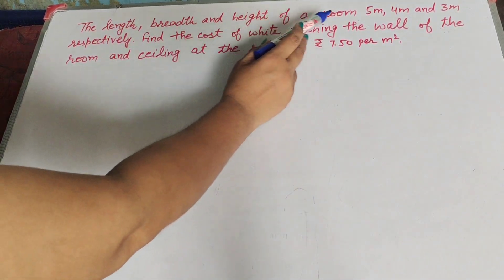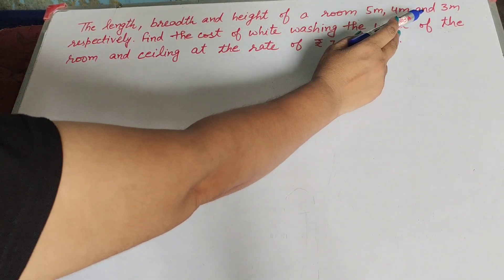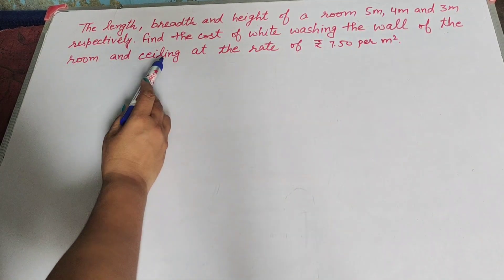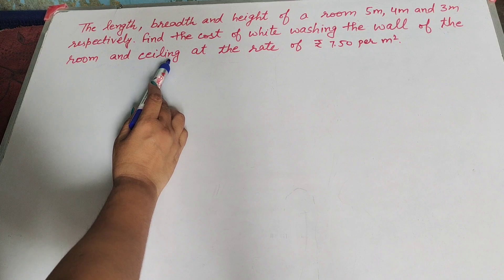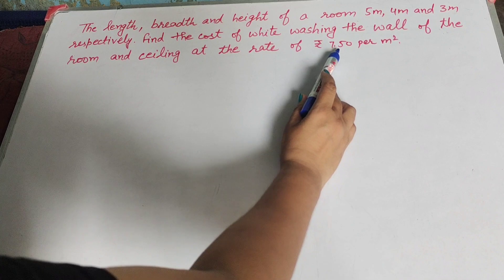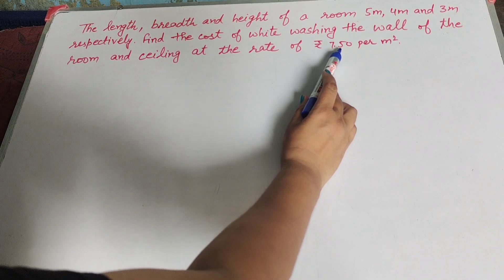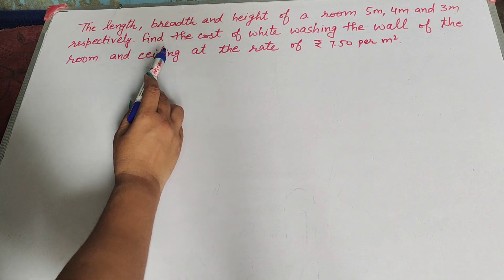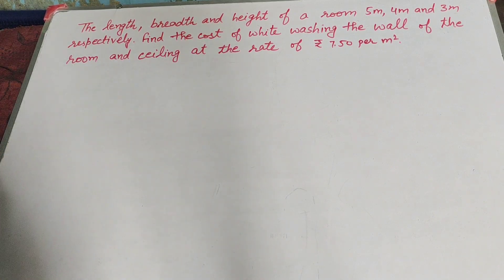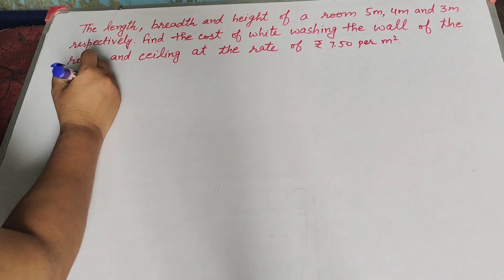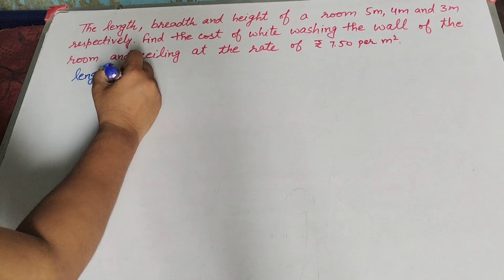In this question, the given information is: length is 5 meter, breadth is 4 meter, and height is 3 meter. We need to find the cost of whitewashing the 4 walls and the ceiling. The 4 walls and ceiling are whitewashed at the rate of rupees 7.50 per meter square.